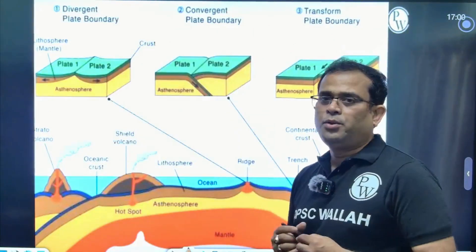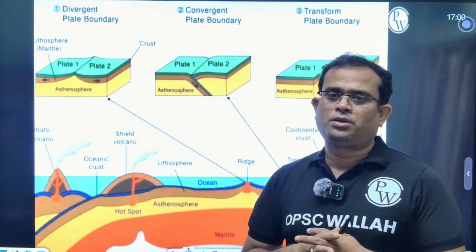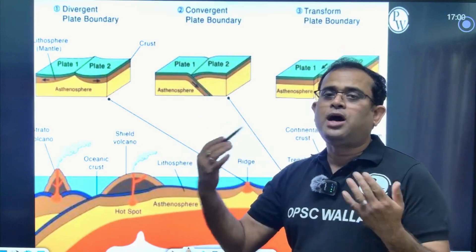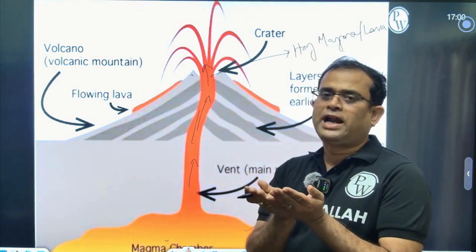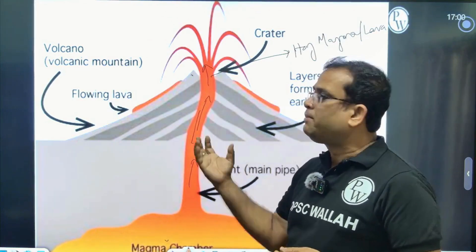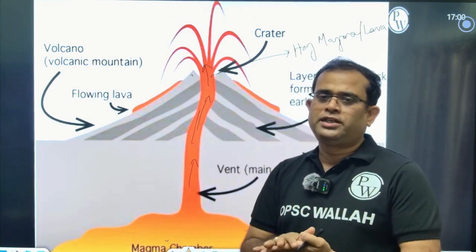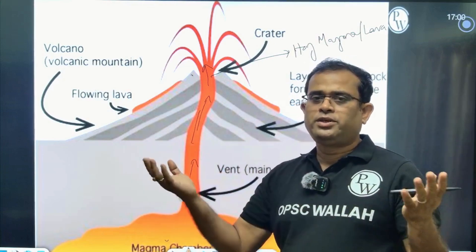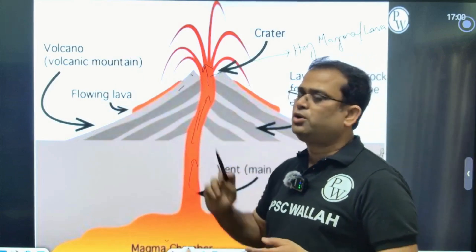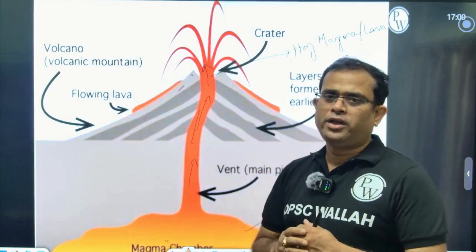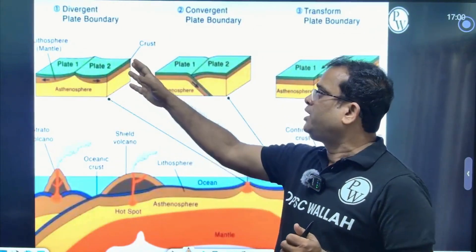The asthenosphere is in the upper mantle. A small crack or fissure develops and magma comes out from the surface, the pressure is released from the surface, and the earth leaves a small gap. When they accumulate, they form lava mountain formations.